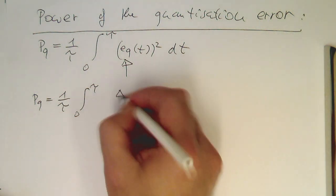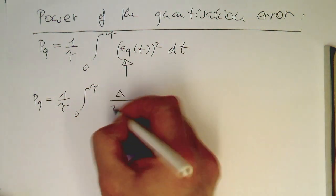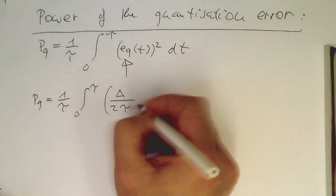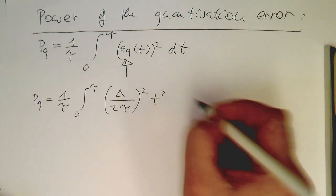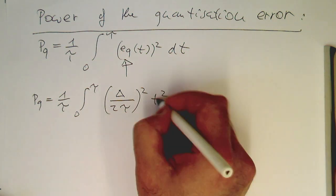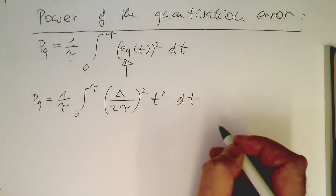This gives us one over tau, zero to tau, and then we have Delta divided by two tau, then the squared dt squared, t squared dt.